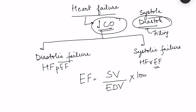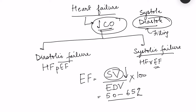Normally, ejection fraction is about 50 to 65 percent. In systolic failure, the heart cannot pump adequately, so stroke volume decreases while end diastolic volume remains normal. Therefore, the ejection fraction is reduced — the denominator is normal but the numerator is reduced.